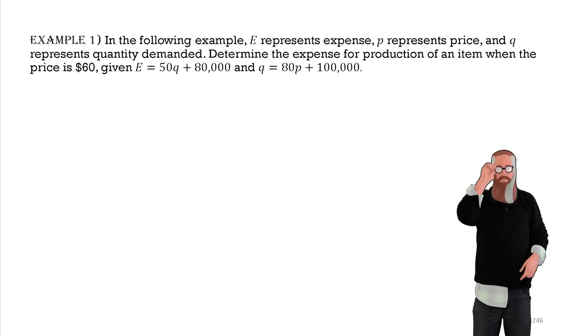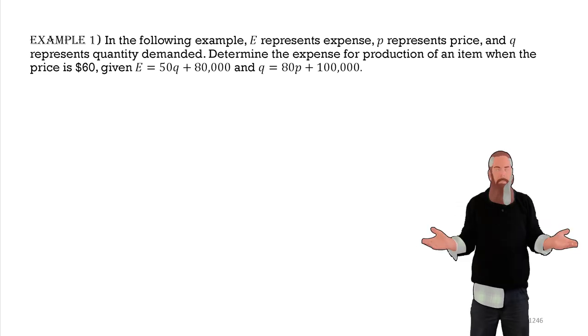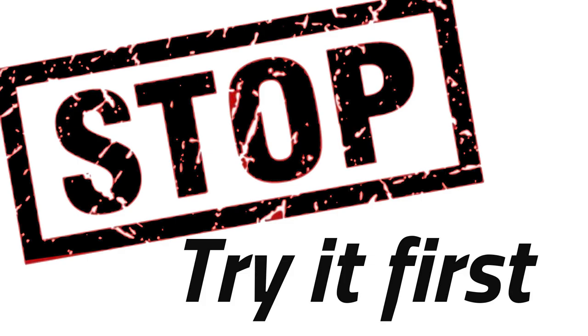In the following example, E represents expense, P represents price, and Q represents quantity demanded. Determine the expense for production of an item when the price is $60, given the E equation and the Q equation.